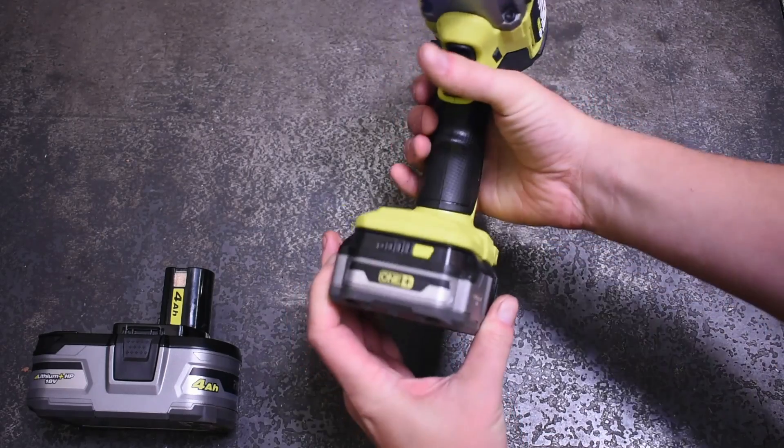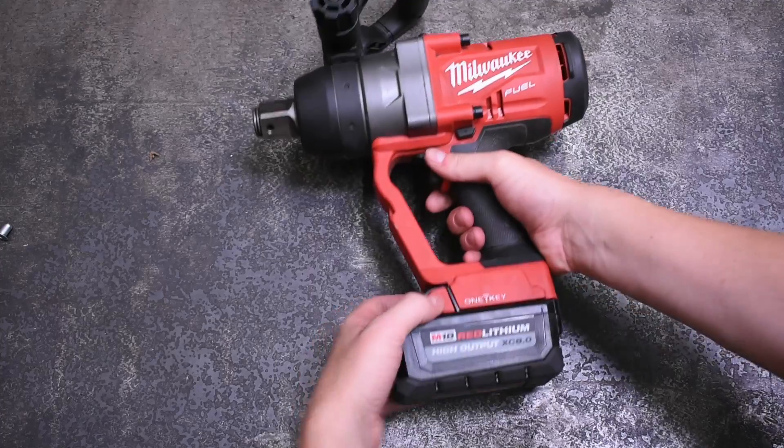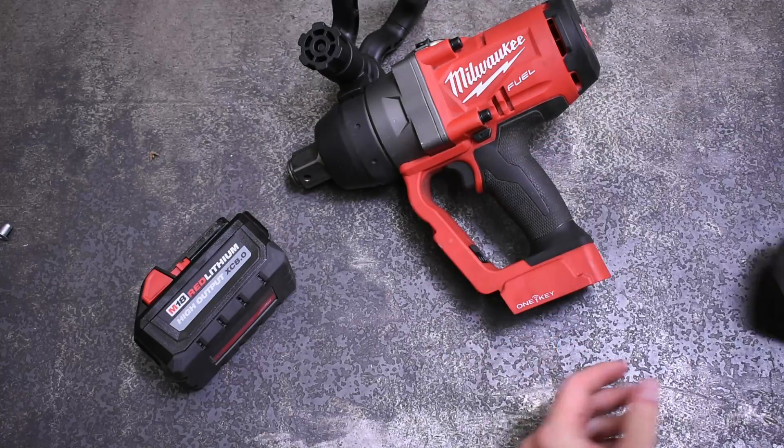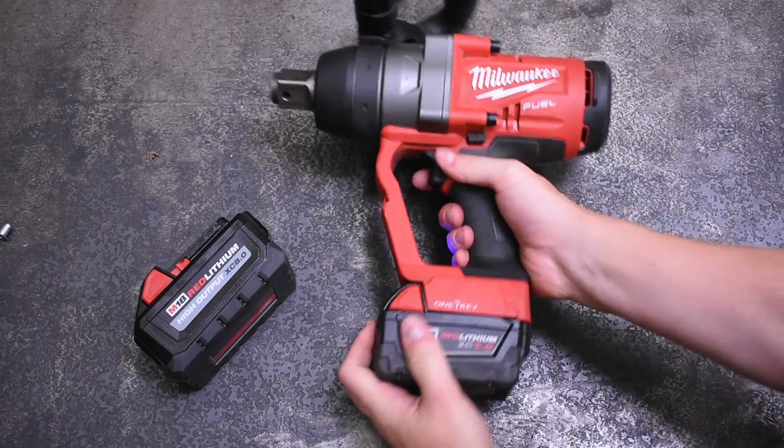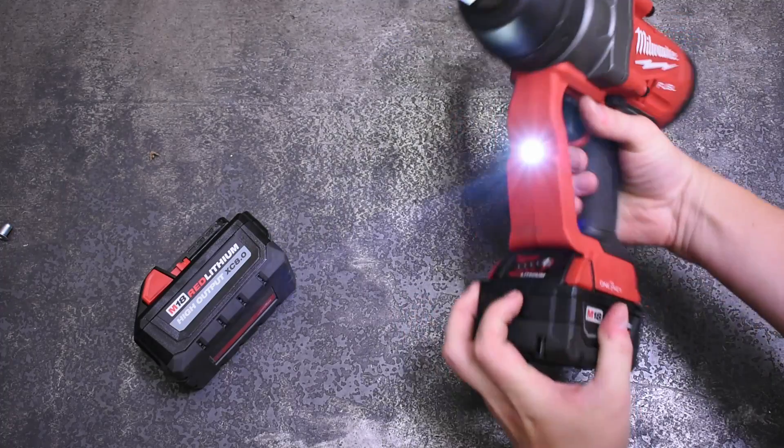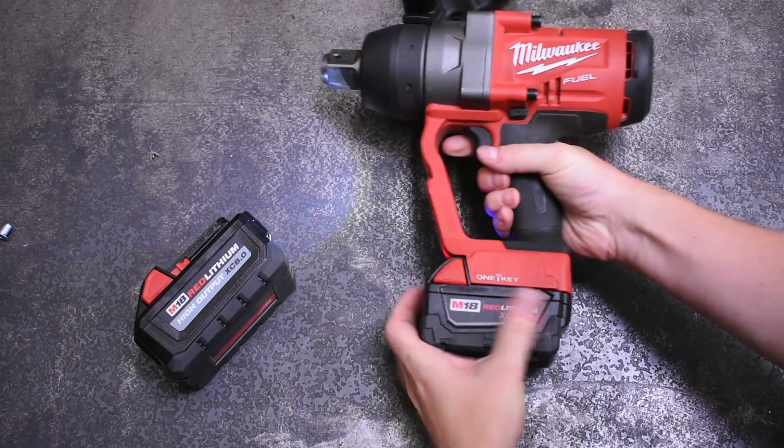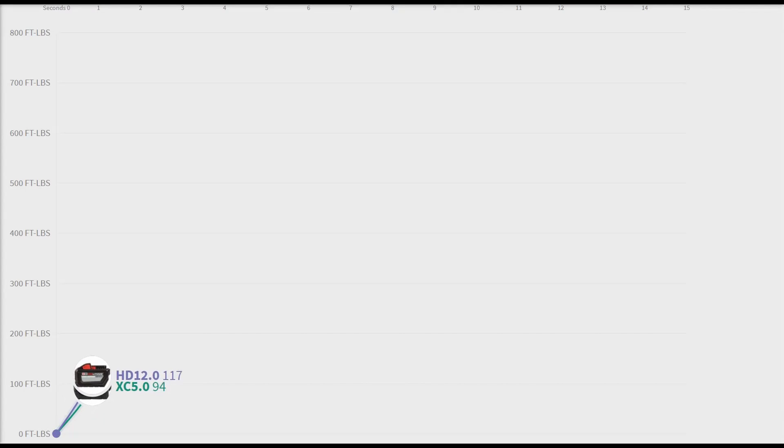That said, since today we'll be comparing this one-inch to the 2767 half-inch high torque, Milwaukee pairs that with an XC 5.0. We're also curious how the one-inch will perform with one. On our episode 18 with high output batteries, we saw only around 20 to 30 foot-pound gains with this half-inch and a full HD 12.0 battery.